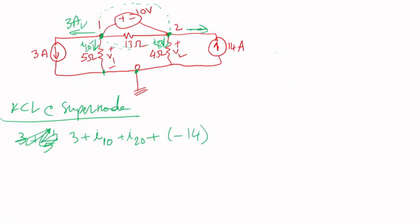Because current going in, I took as negative and going away from the node, I took as positive. So I got all the current. So that's equal to zero.